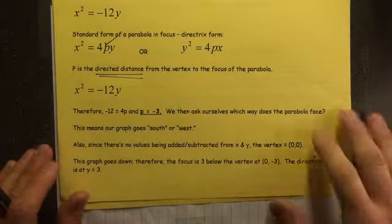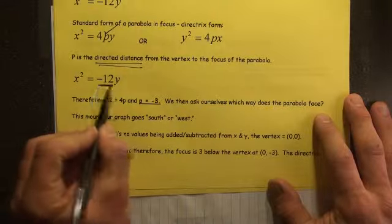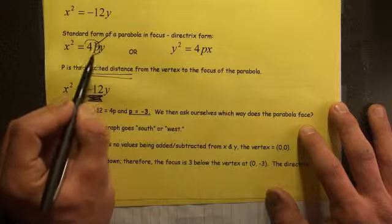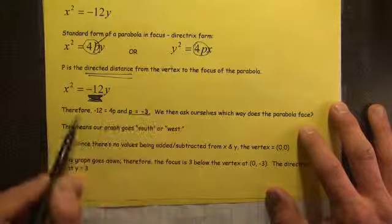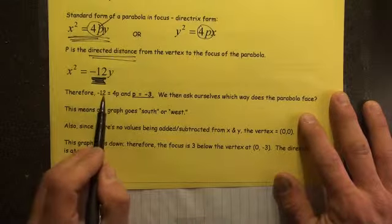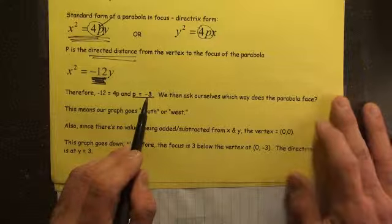What we do is this. The argument is that negative 12 is in the 4P position. It would actually be this equation here. So therefore, negative 12 equals 4P. Therefore, P is negative 3.